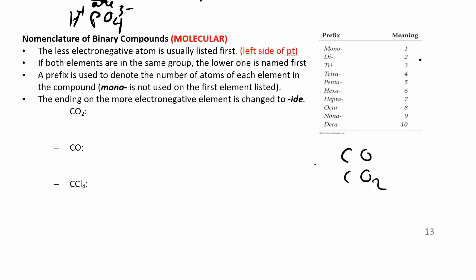There are a couple of tricks here. You always name the left element before the right, in whatever order they appear. Also, if the elements are in the same group, you name the lower one first. And you're going to need these prefixes — but you never start with mono if there's just one of them.